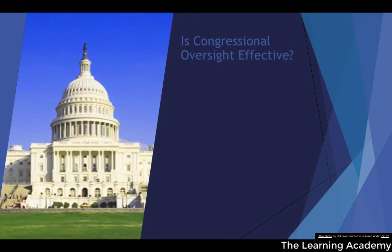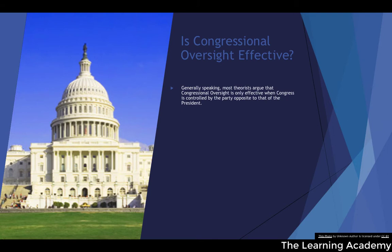The key political debate is whether Congressional Oversight is effective, and if so, whether it leads to better policy and better scrutinising of the Executive. Generally speaking, most theorists argue that Congressional Oversight is really only effective when Congress is controlled by the party opposite to that of the President — because the U.S. effectively has a two-party system.